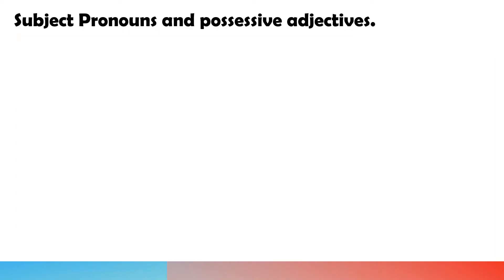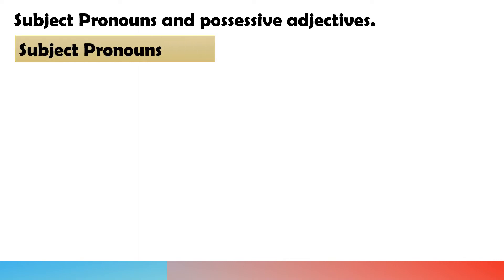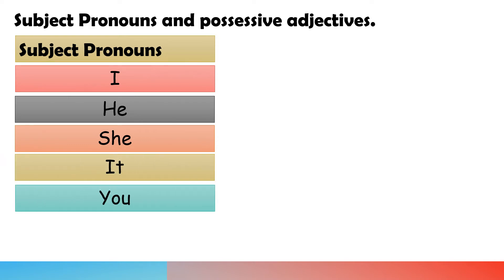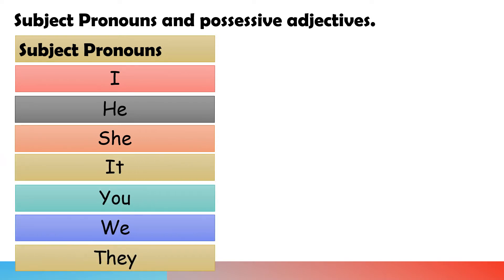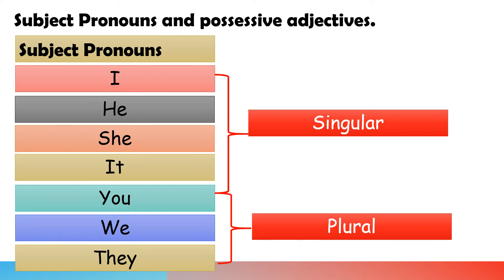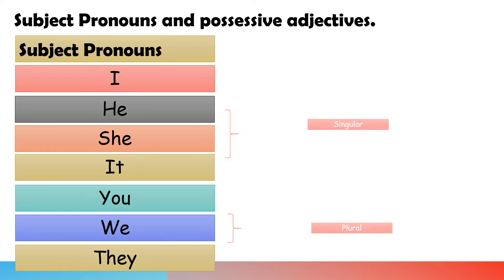After learning about sentences, we are going to learn subject pronouns and possessive adjectives. There are seven subject pronouns: I, he, she, it, you, we, they. I, he, she, it, and you are singular pronouns. You, we, and they are plural pronouns.